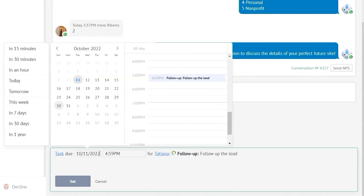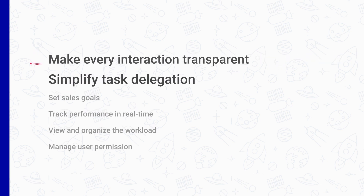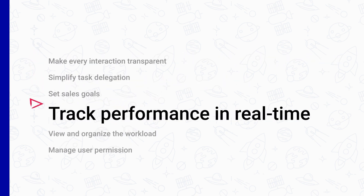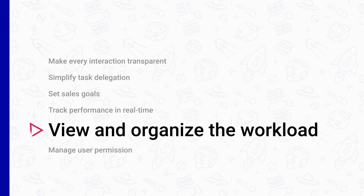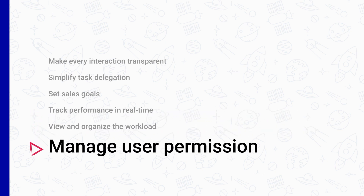On top of that, Como will ensure that every lead and customer interaction is transparent. It will simplify task delegation, set sales goals, track performance in real time, view and organize the workload of each team member, and manage user permissions. Try Como for free for 14 days, and you will never want to go back to managing your pipeline manually ever again.